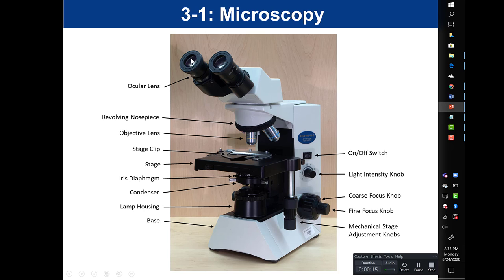We have our ocular lens. Ocular refers to eyes — these are the eyepieces that we look in, and they also have a lens in them. On our microscopes, this will magnify an image 10x what we see with our naked eye.